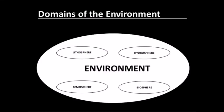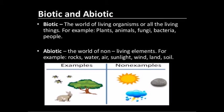To summarize, the domains of the environment are lithosphere, hydrosphere, atmosphere and biosphere. Within those four domains, there are both living organisms and non-living elements. The world of living organisms is called the biotic environment, and the world of non-living elements is known as the abiotic environment. These are the parts of the environment.